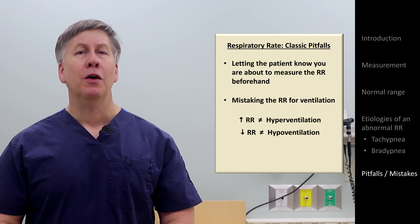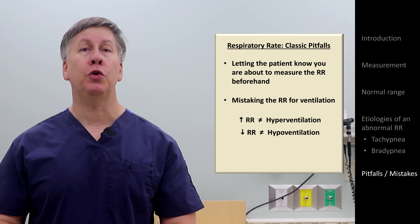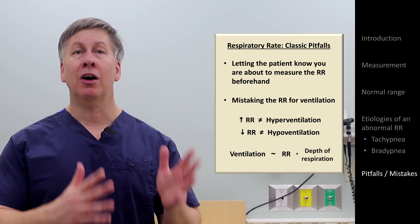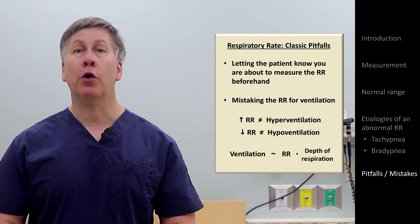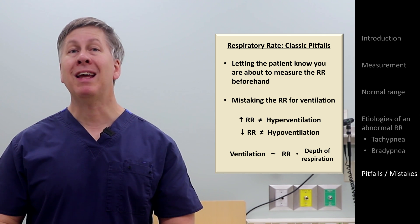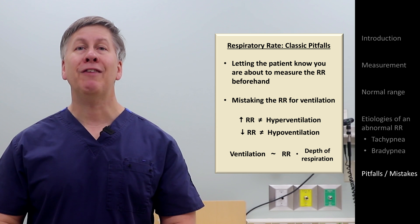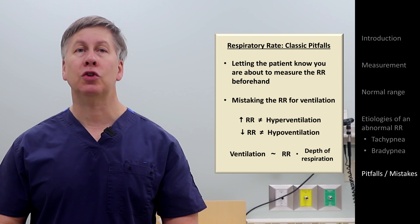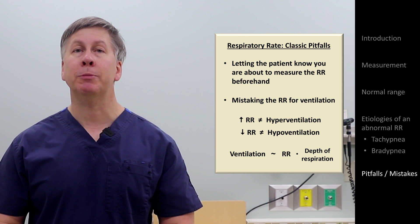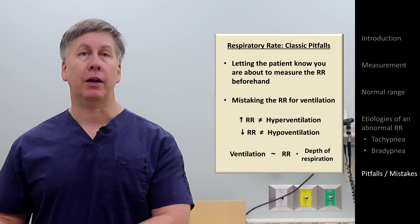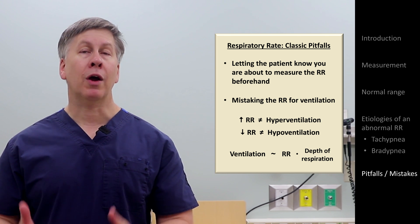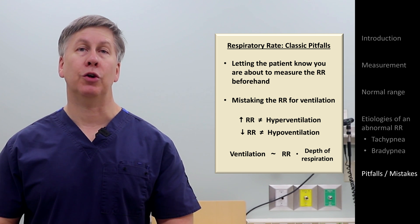Why is this the case? Ventilation refers to the volume of gas exchanged per unit time, and it is roughly proportional to the respiratory rate times the depth of each respiration. So a patient who is breathing very quickly but also with very shallow breaths might not actually be hyperventilating, and may even be hypoventilating, if the depth of the respirations is decreased to a greater degree than the rate is increased. Likewise, there are some patients with a normal respiratory rate who are hyperventilating due to very deep breaths, a phenomenon known as Kussmaul respirations, described most commonly in patients with ketoacidosis.